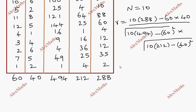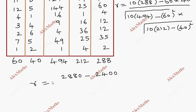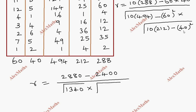Now simplification. R equals: numerator is 10 into 288, which is 2880, minus 60 into 40 equals 2400. Denominator: root of 10 into 494 minus 60 square, giving 1340 inside the root, into root of 10 into 212 minus 40 square, giving 520 inside the root.